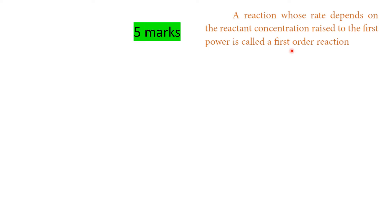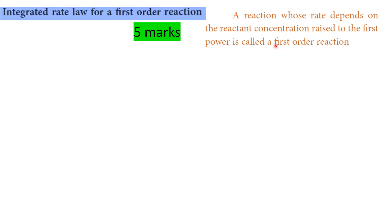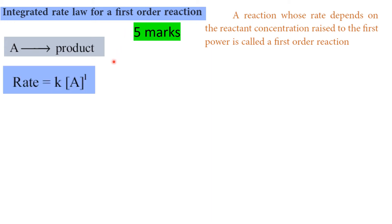Very important 5-mark question — what is the first order reaction integrated rate law? For A going to product, first order: rate equals k into A to the power 1. Writing in terms of concentration: minus dA by dt equals k into A to the power 1.